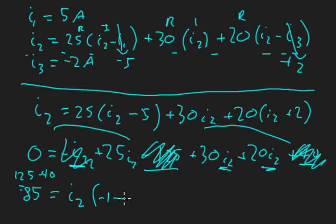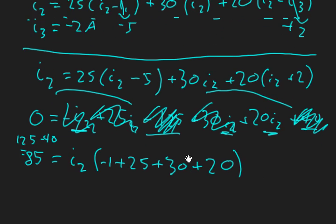Negative 1 plus 25 plus 30. We have one more I2 term plus 20 equals that. And now if we sum all this stuff in brackets we should get 74.